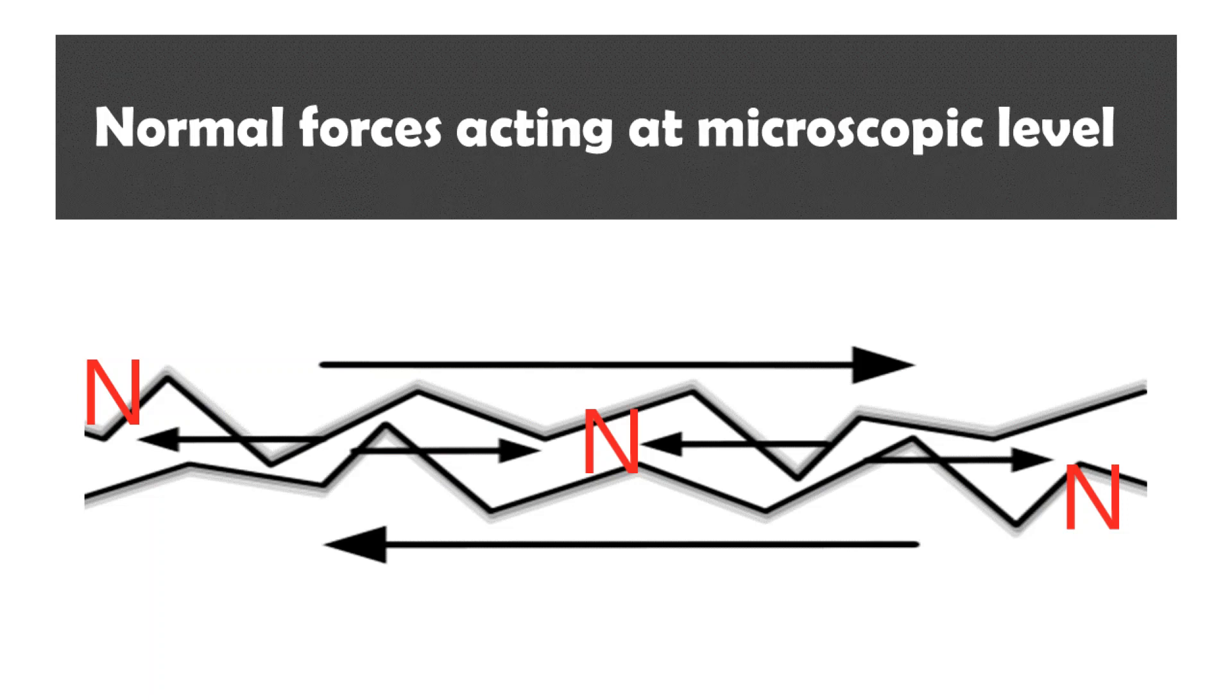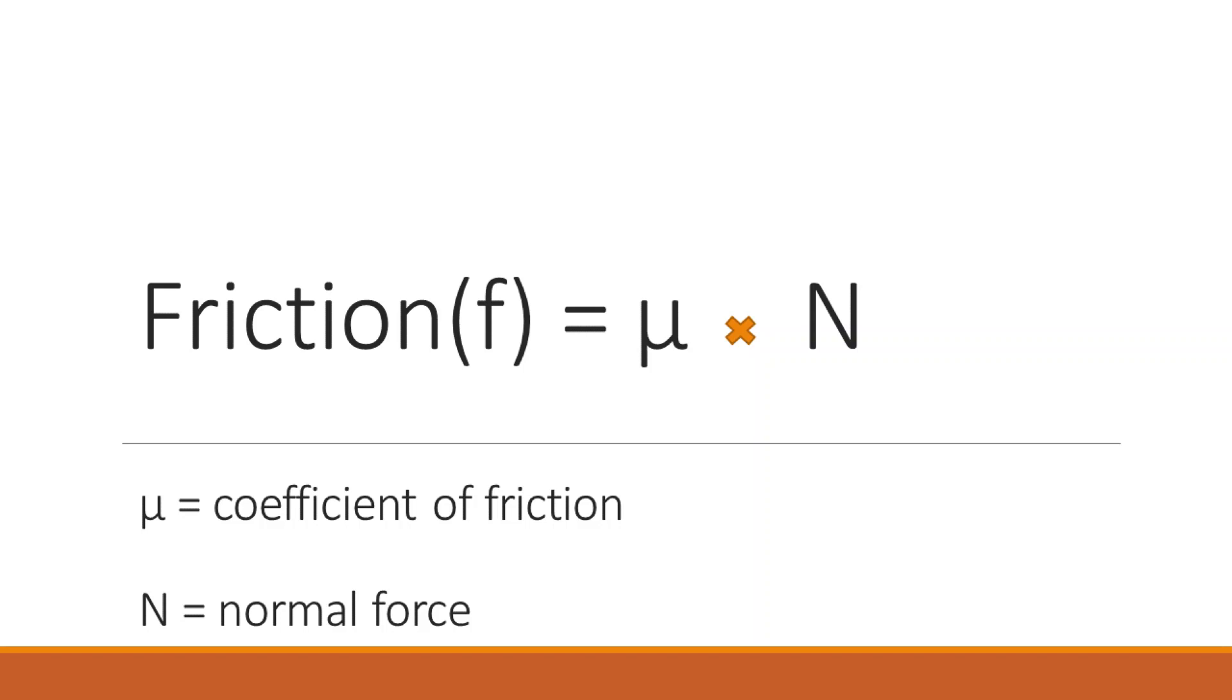When we study friction we notice that all surfaces do not oppose the relative motion between them equally. Why does this happen? This is because some surfaces cause more friction than others, which is dependent on the roughness of the surface.